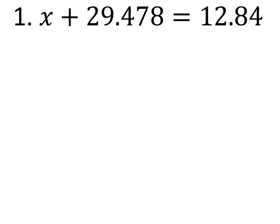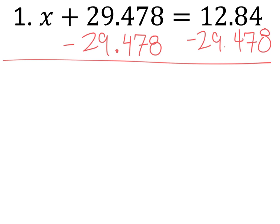So what I mean by that is I would take this 29.478 and subtract it from both sides. And the nice thing about this too is that you don't even have to do this longhand. We know this is 0. And the second part here, 12.84 minus 29.478, just put that into a calculator. 12.84 minus 29.478.